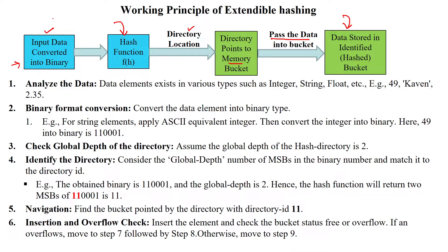Whatever data we have, we convert it into binary digits. For example, for the value 2, we convert it to binary: 000110. Then we apply the hash function to those binary digits. Based on that, the hash function returns the index — here '10' — which points to the memory location where that value is stored. So '10' is only the hash index, and the value 2 will be stored in the given memory bucket.